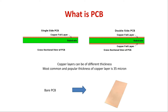What is the printed circuit board made up of? It is made up of a substrate onto which a thin copper layer is deposited all around. This is a sample board onto which copper is completely deposited — this is called a bare PCB. There can be a single-sided PCB with copper on one layer, or a double-sided PCB with copper on both layers. Copper layers can be of different thicknesses, but the most common thickness used in industry is 35 microns.